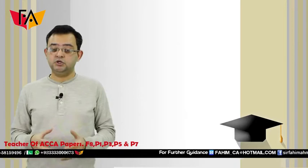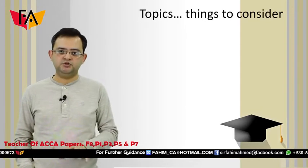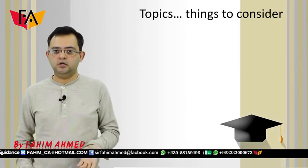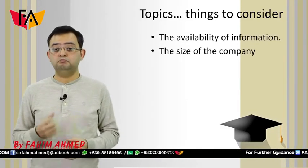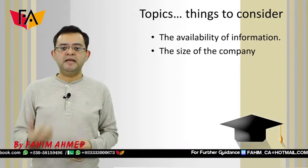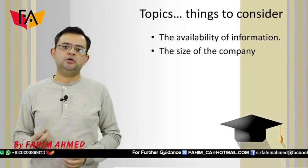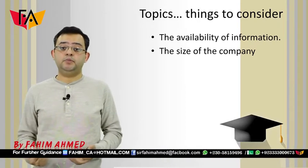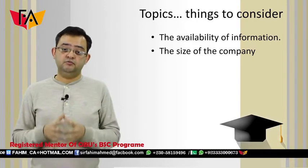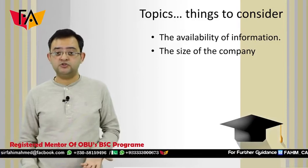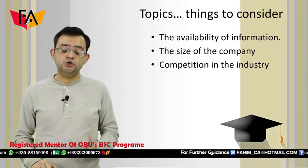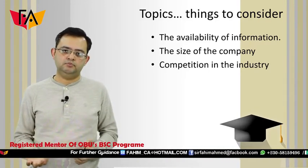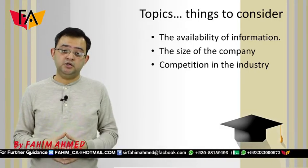First, let's talk about the topics. Remember, these topics are given to you by Oxford Brookes University and not by ACCA itself. When you are deciding a topic, there are a few things you need to consider. The first is the availability of information — this is the most crucial thing. Many students pick a topic and later realize they cannot get enough information, wasting too much time. So before you decide, gather enough information to start working on that topic. The second thing is the size of the company. You should take a listed company, as it is recommended because information is easier to obtain than for a privately owned company.